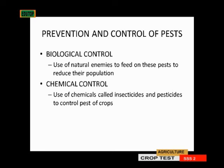The last control method is chemical control — that is when you use chemicals such as insecticides and pesticides. Like I've mentioned: Tamaron 20, DD-Force, aldrin dust, and things like that to control pests. That is the chemical control method.